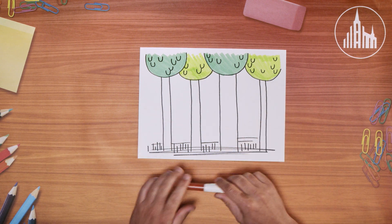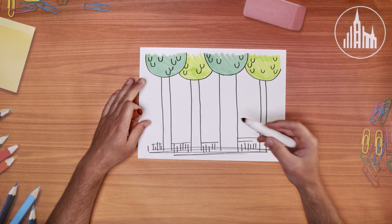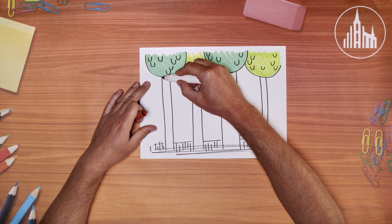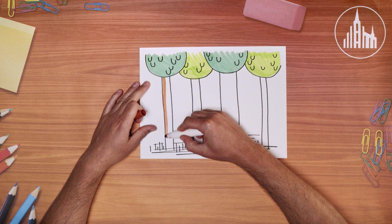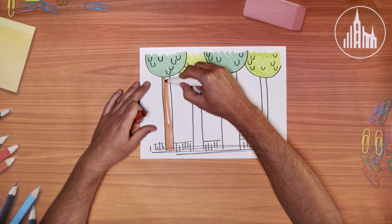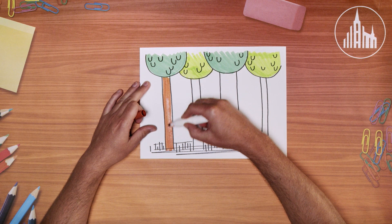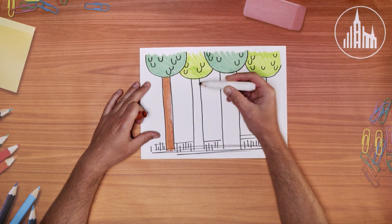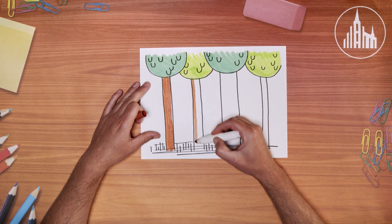All right, so now we're going to go ahead and we're going to do the trunks of the trees. And so I am going to make, I've got this special brown color that I like here. And I'm just going to color those in. I'm going to color them in pretty fast.